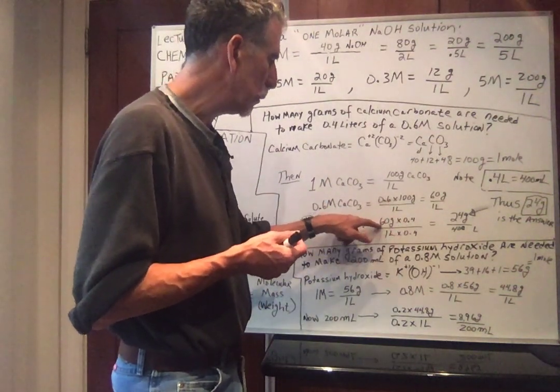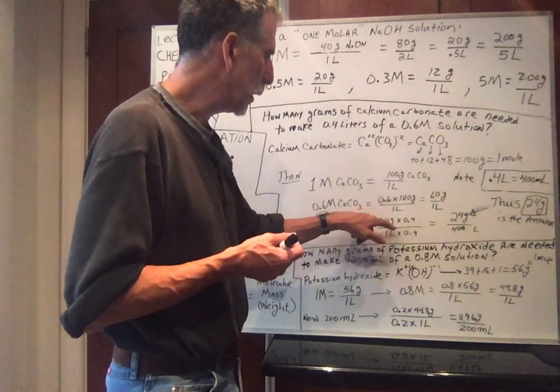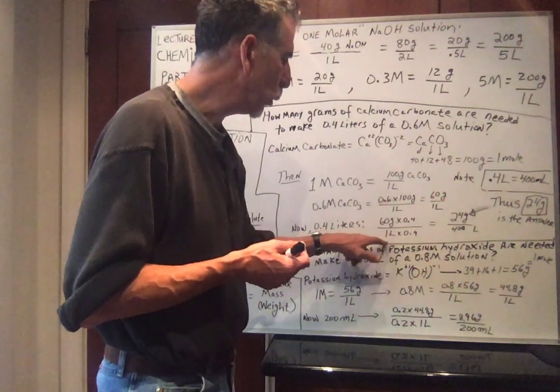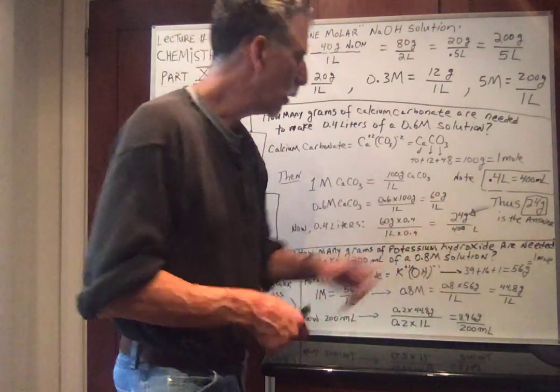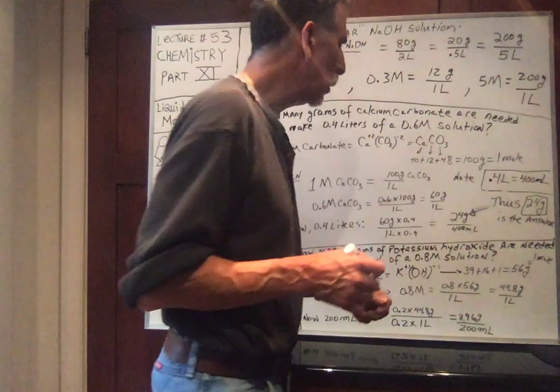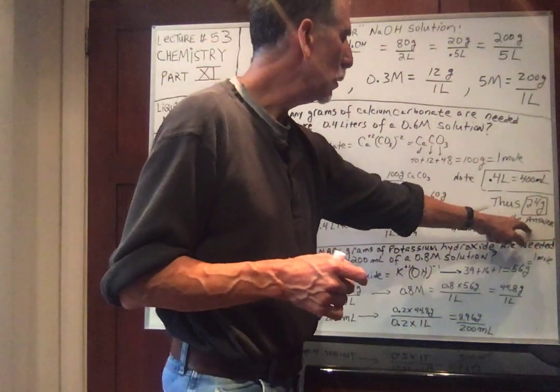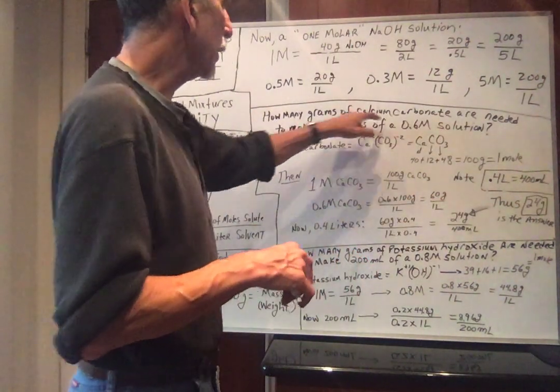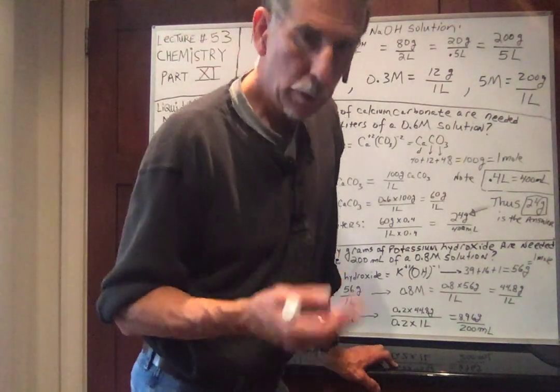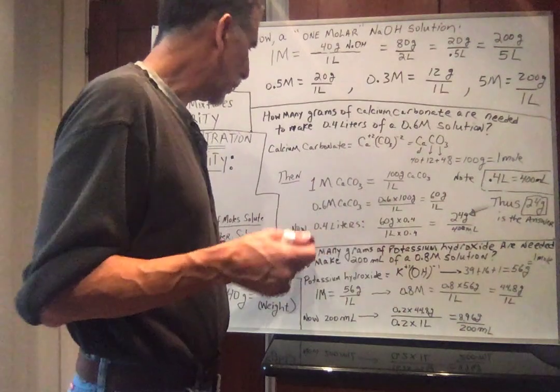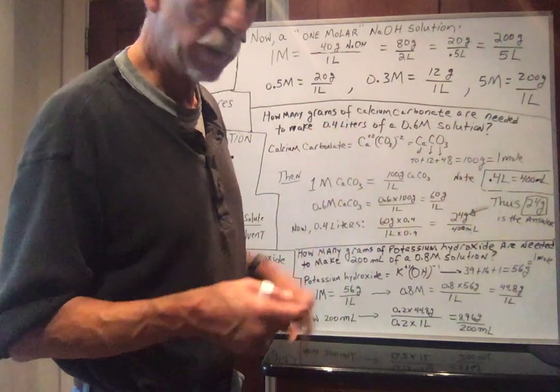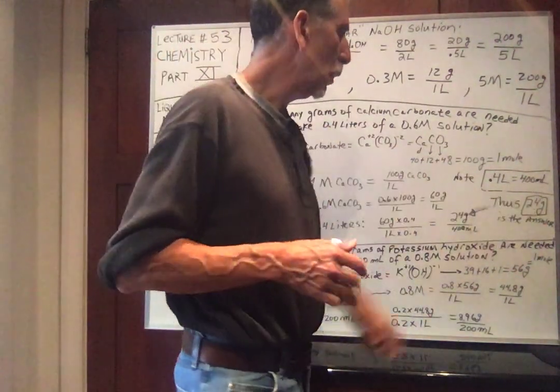So it's still a 0.6 concentration. So if we multiply 0.6 times that, multiply 0.6 times one liter, 0.4 times 60 is 24 grams. 0.4 times one liter is the 400 milliliters. So the answer then is 24 grams of calcium carbonate in 400 milliliters of solvent gives us a 0.6M solution in 400 milliliters of it. So it would require 24 grams.